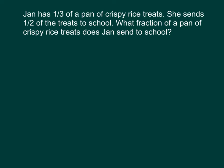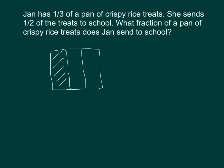Jan has one third of a pan of crispy rice treats. She sends half of the treats to school. What fraction of a pan does Jan send to school? We're now imagining that Jan only has a third of a pan, and she still wants to send half of the treats to school. Will she be sending a greater amount or a smaller amount than before? It's a smaller amount — she had half of a pan before, and now she only has a third of a pan. So we're finding one half times one third.